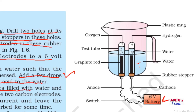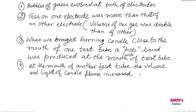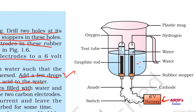First observation was that bubbles of gas evolved at both the electrodes. That's because when current passes through the water, every molecule of water decomposes into a molecule of hydrogen and a molecule of oxygen.